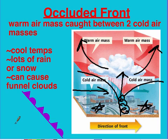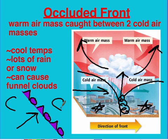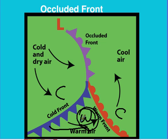Looking at the occluded front symbol, it's purple — a mix of blue and red — representing a mixture of a cold and warm front. It has both circles and triangles on it. The direction the symbols point shows which way the front is moving. A final graphic helps clarify: a cool air mass sits in front of a warm front, a warm air mass sits in front of a cold front, and as that cold front moves through squishing the warm air higher into the atmosphere, it forms the occluded front.